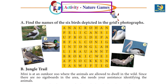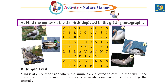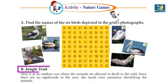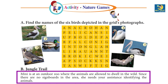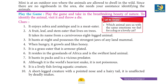Activity — Nature Games. Part A: find the names of the six birds depicted in the grid's photograph. Part B — Jungle Trail: Mini is at an outdoor zoo where animals are allowed to dwell in the wild. Since there are no signboards in the area, she needs your assistance identifying the animals. Play the game and take in the breathtaking beauty of nature.